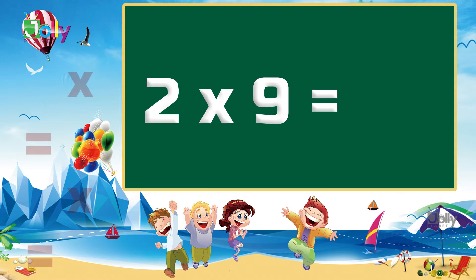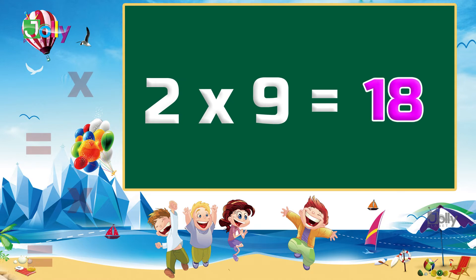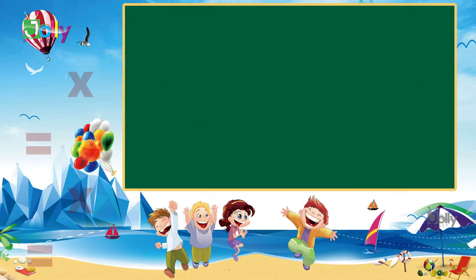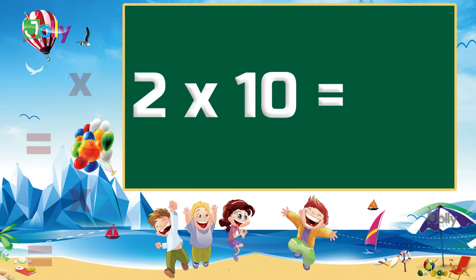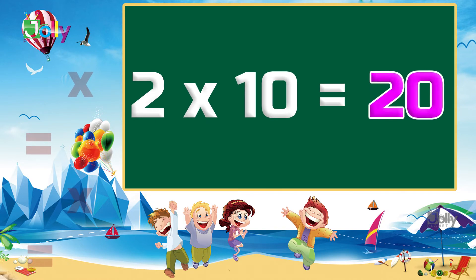Two nines are eighteen. Two tens are twenty.